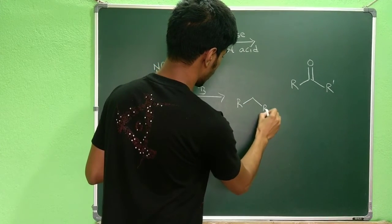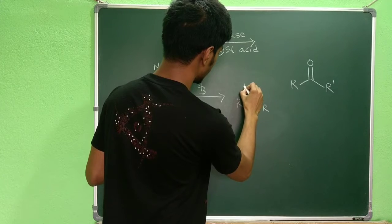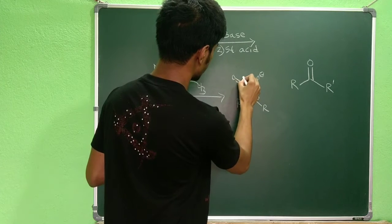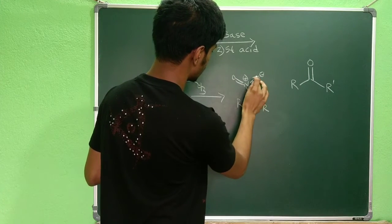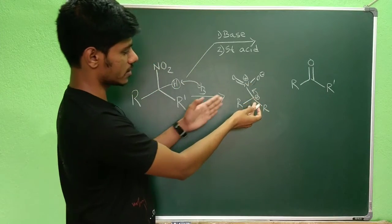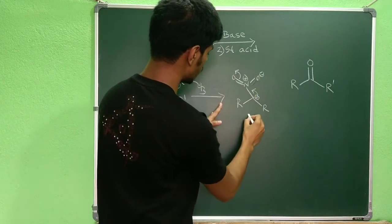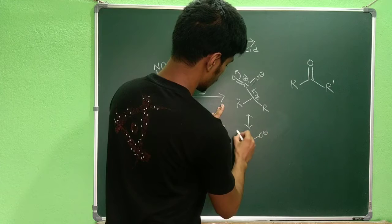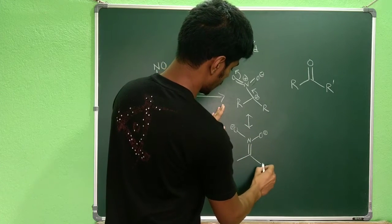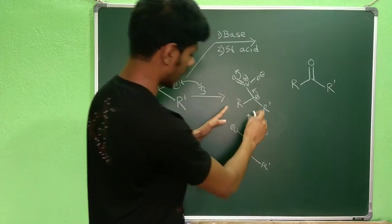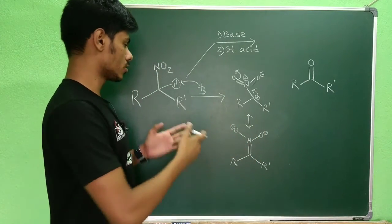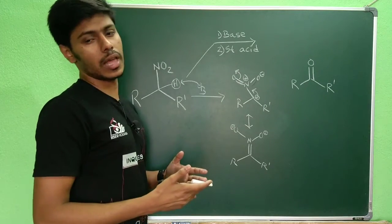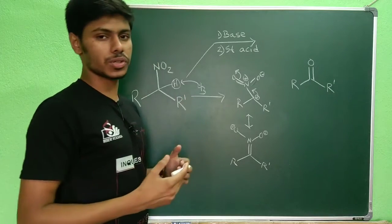This generates an anion which can be stabilized into the nitro group, as shown by the resonance structure. This is a stable anion due to resonance stabilization. That is why even treatment with a weak base will cause this enolization — formation of the nitronate anion, which is the equivalent of an enolate.